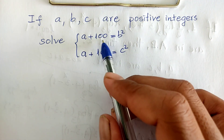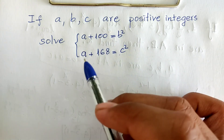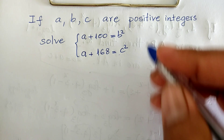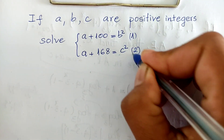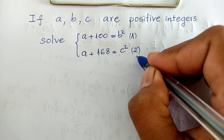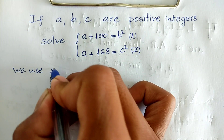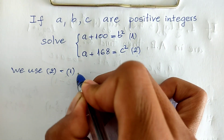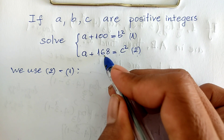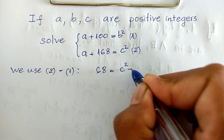We have the first equation and the second equation. Our system has three variables. I take the second equation and subtract the first equation. Second equation minus first equation gives us 168 minus 100 equals 68, which equals c squared minus b squared.